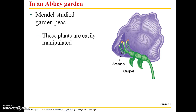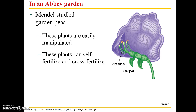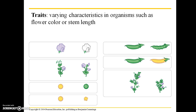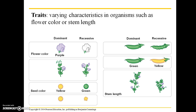Mendel was an Austrian monk. He studied garden peas, and these plants are easily manipulated. The plants can either self-fertilize or they can cross-fertilize. If the plant self-fertilizes, you can take the pollen within the stamen and let that plant self-fertilize its carpel. Or you can transfer pollen from another plant and fertilize the carpel by hand. Traits are simply varying characteristics in organisms, such as flower color or stem length.